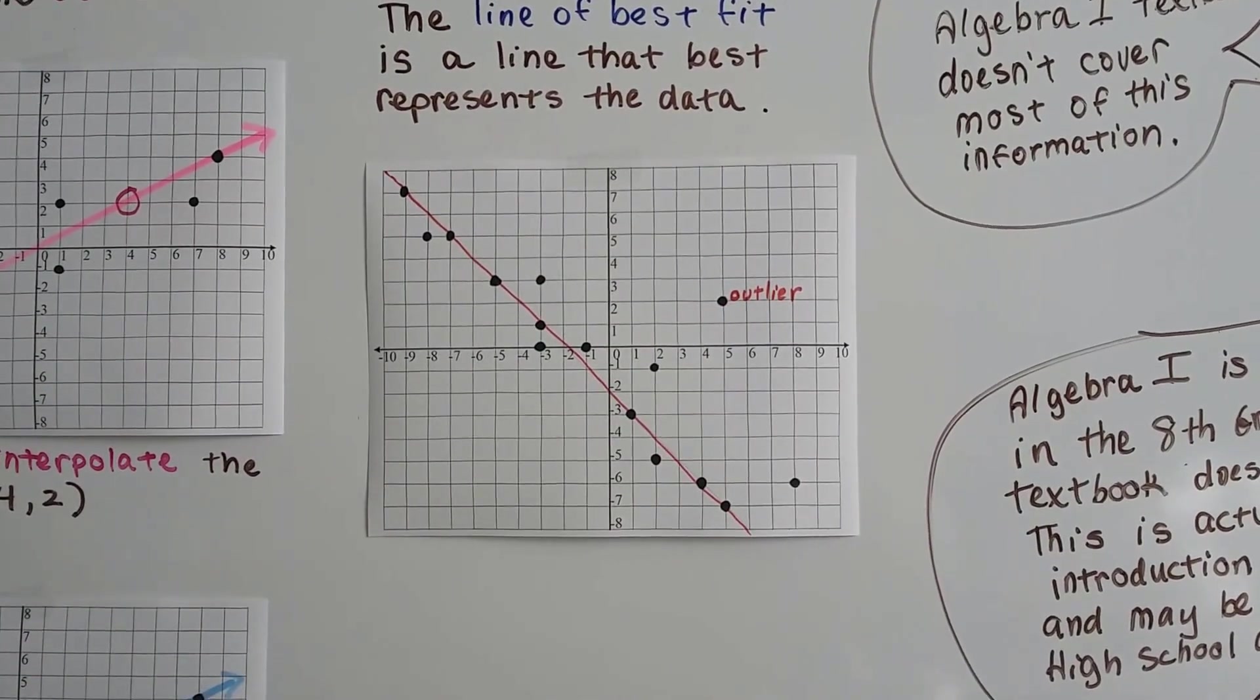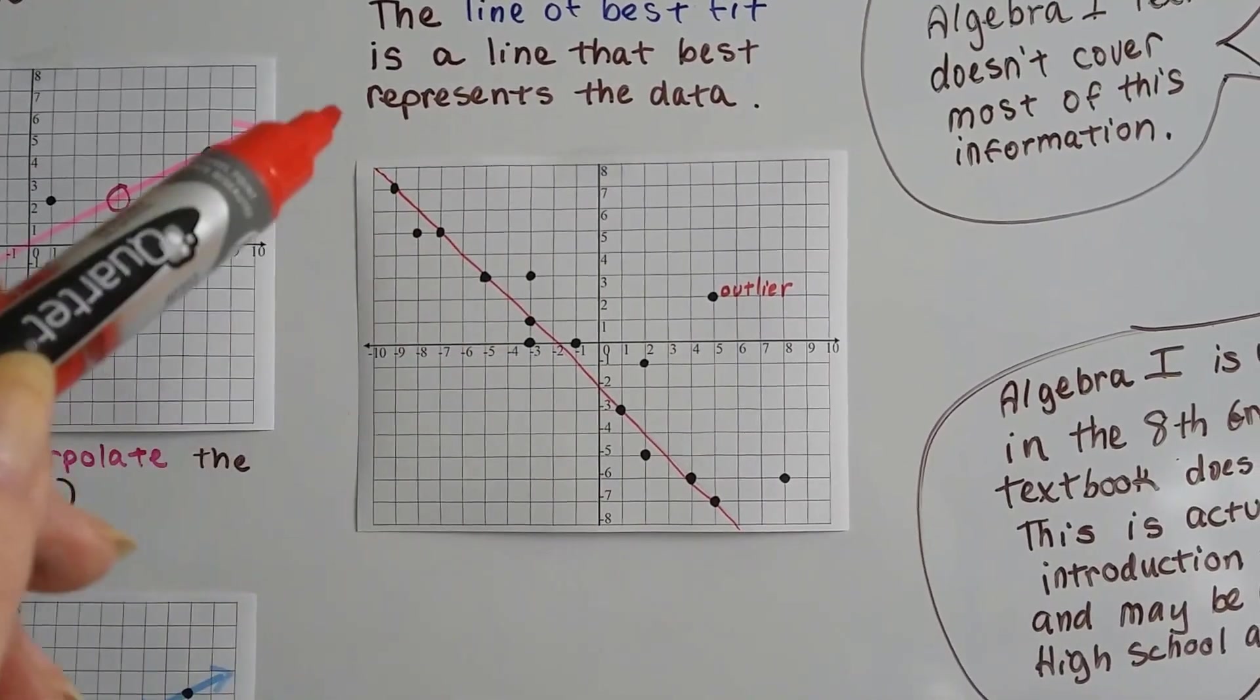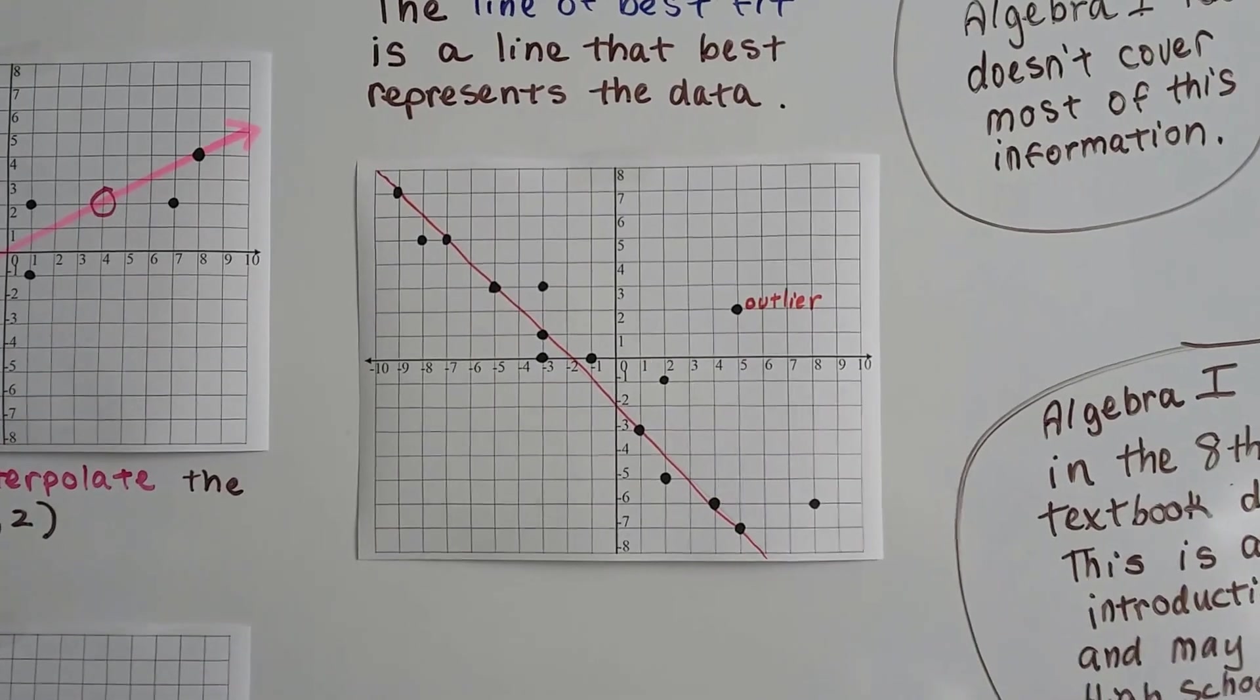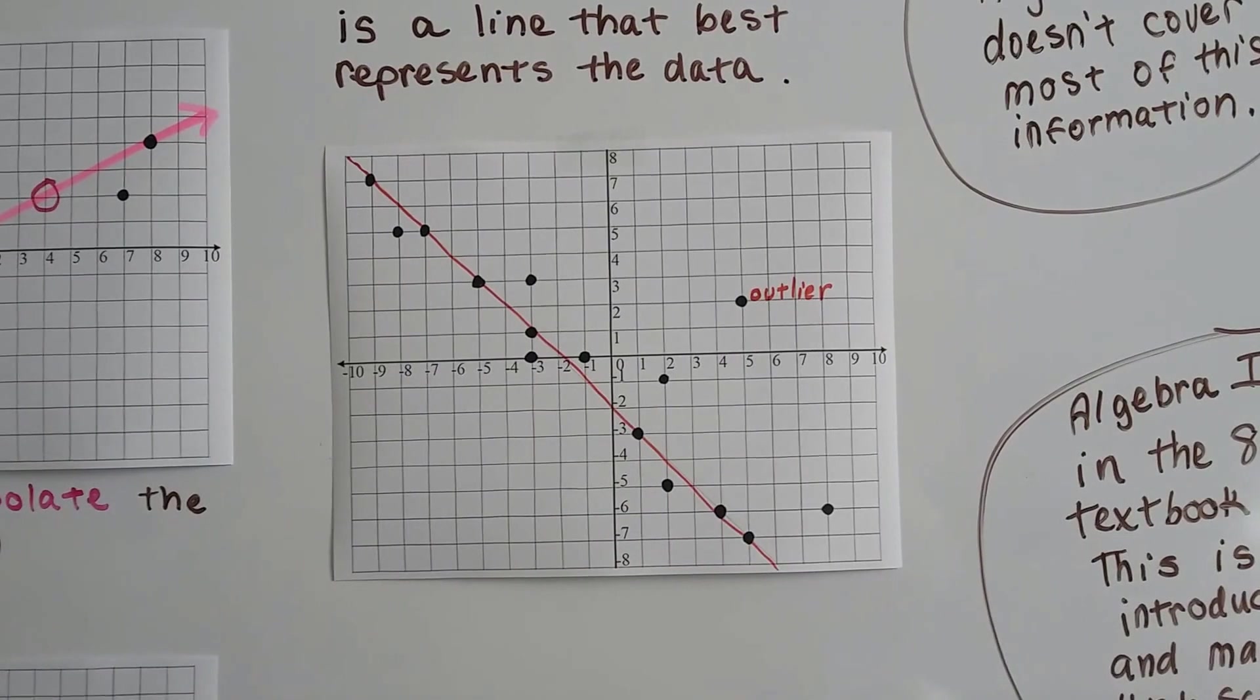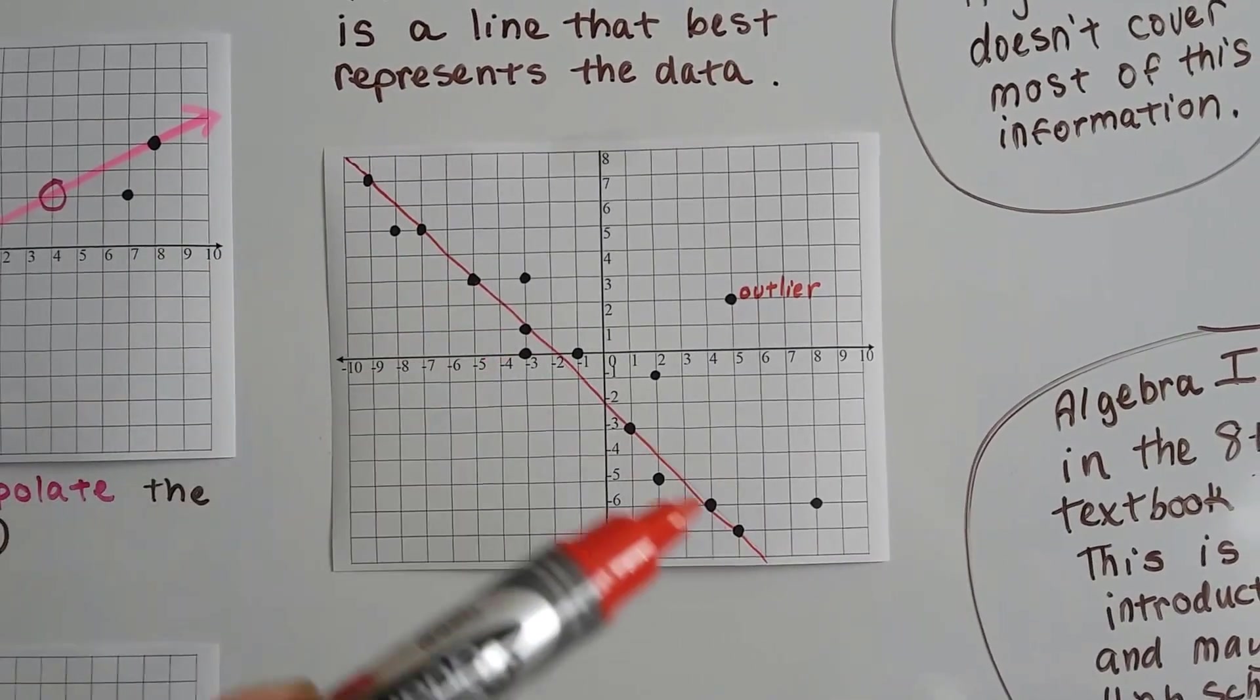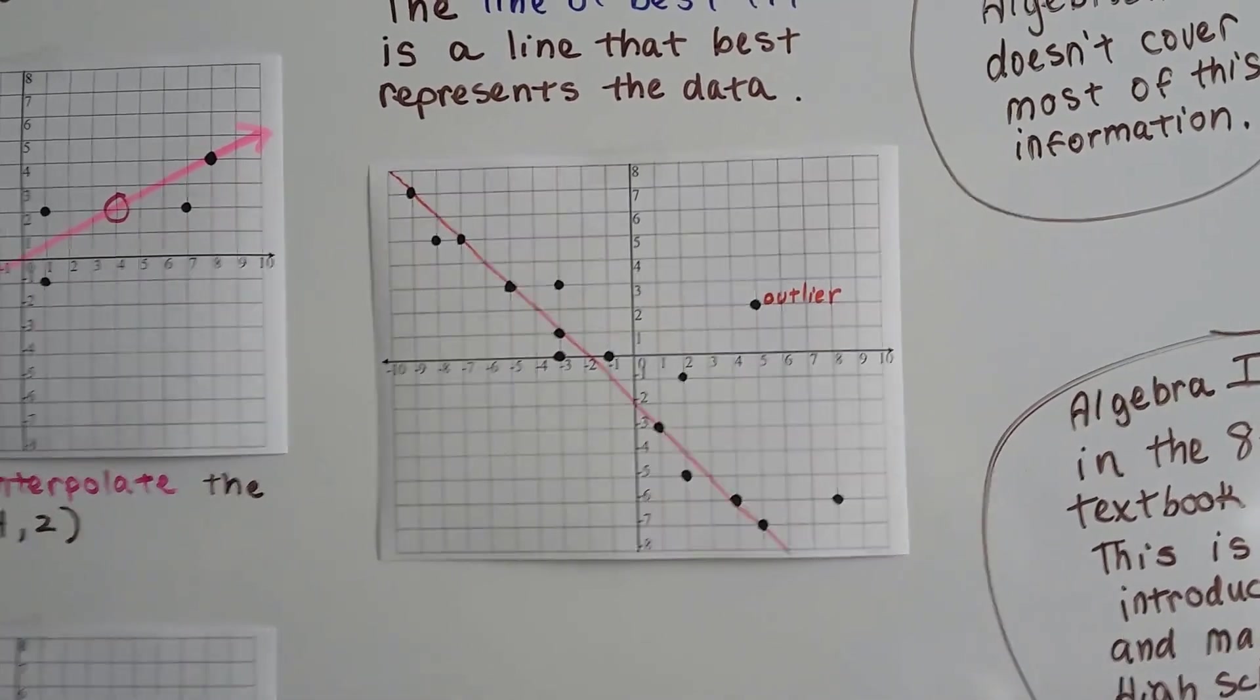And we ignore the ones that are way far away, and we stick with the ones that are kind of clustered together. So the line of best fit for this is the one where I drew the red line through it, because that closely represents what this cluster of points is doing. So that's a trend line.